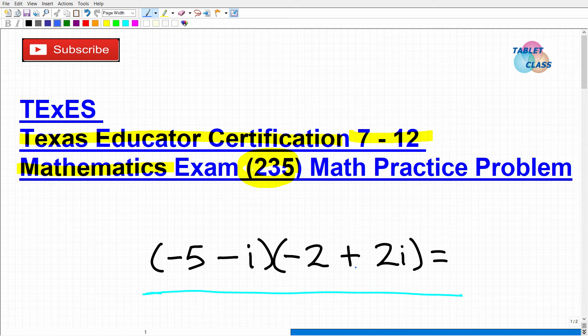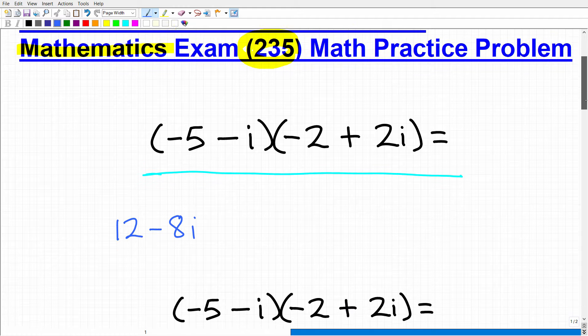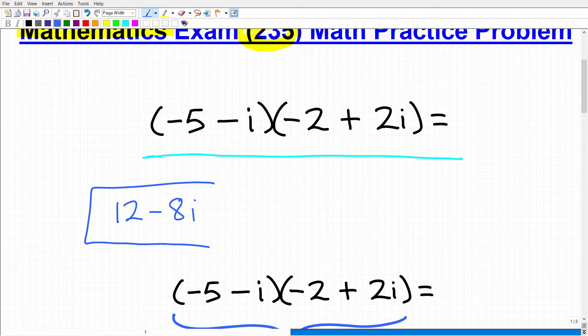But let's go ahead and get started here. So we have two complex numbers, and we need to multiply these two together. So these numbers are in the form of a plus bi. Let's go ahead and take a look at the answers. So if you did this right, this is the answer that hopefully you got, 12 minus 8i. Now, if you were able to get this right, that is fantastic.